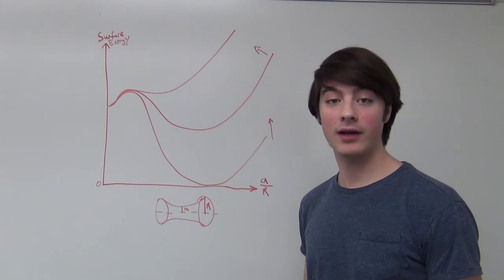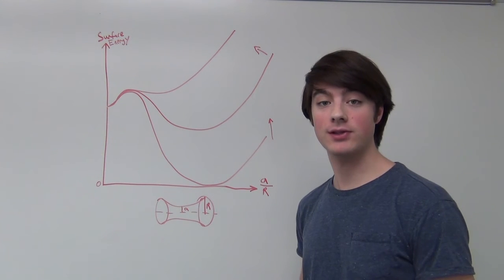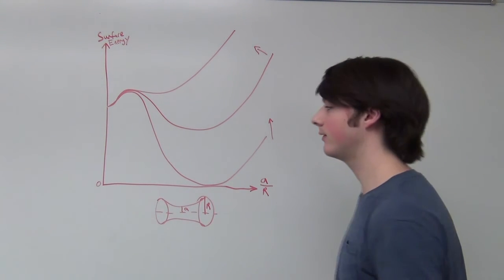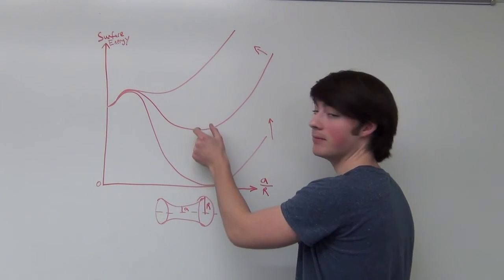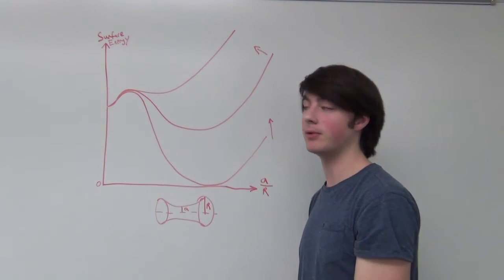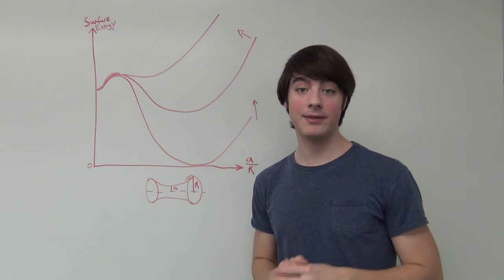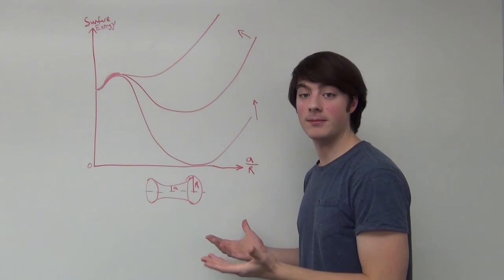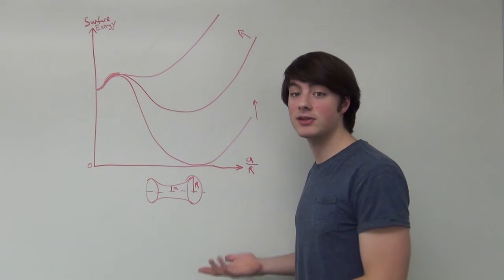However, as we've gone from a small separation between the rings to a large separation between the rings, the catenoid has stayed in this minimum. It's still a local minimum here, so it does follow the minimization principle. Ultimately, the bubble does want to be at the global minimum, but at local minimums, the minimization of the integral is still achieved.